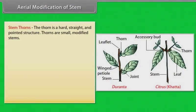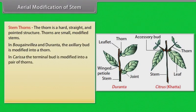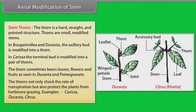The thorn is a hard, straight and pointed structure. Thorns are small, modified stems. In Bougainvillea and Duranta, the axillary bud is modified into a thorn. In Carissa, the terminal bud is modified into a pair of thorns. The thorn sometimes bears leaves, flowers and fruits as seen in Duranta and pomegranate. The thorns not only check the rate of transpiration but also protect the plants from herbivore grazing. Examples: Carissa, Duranta, Citrus.